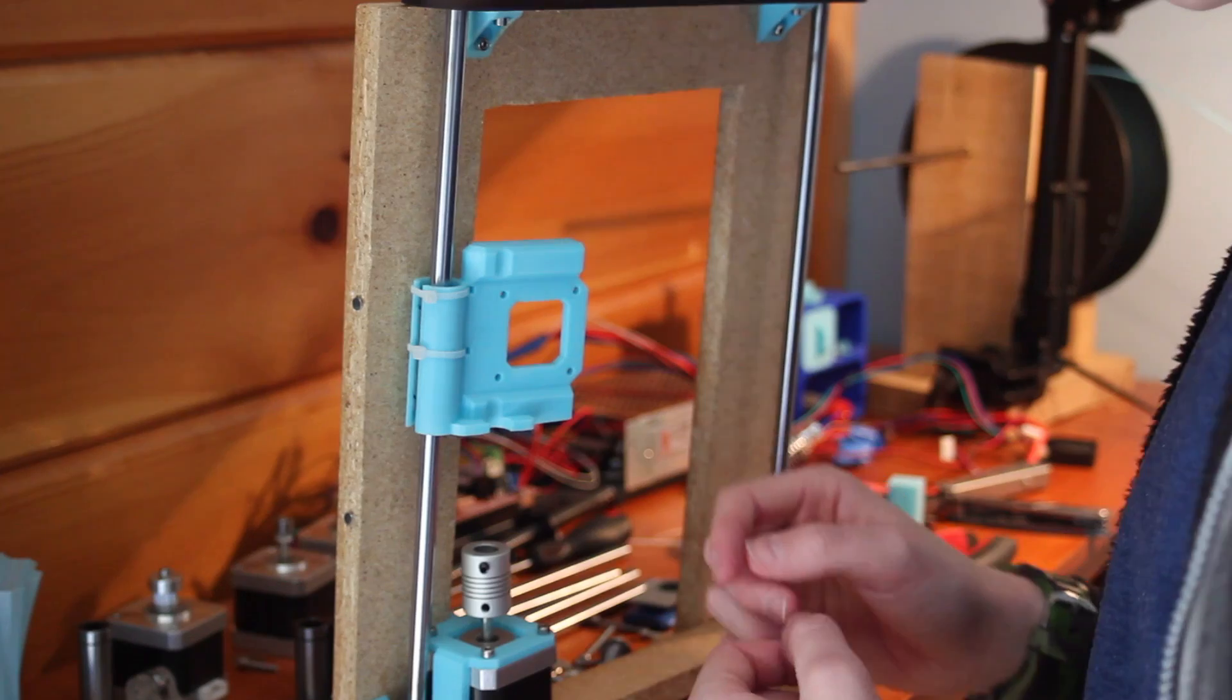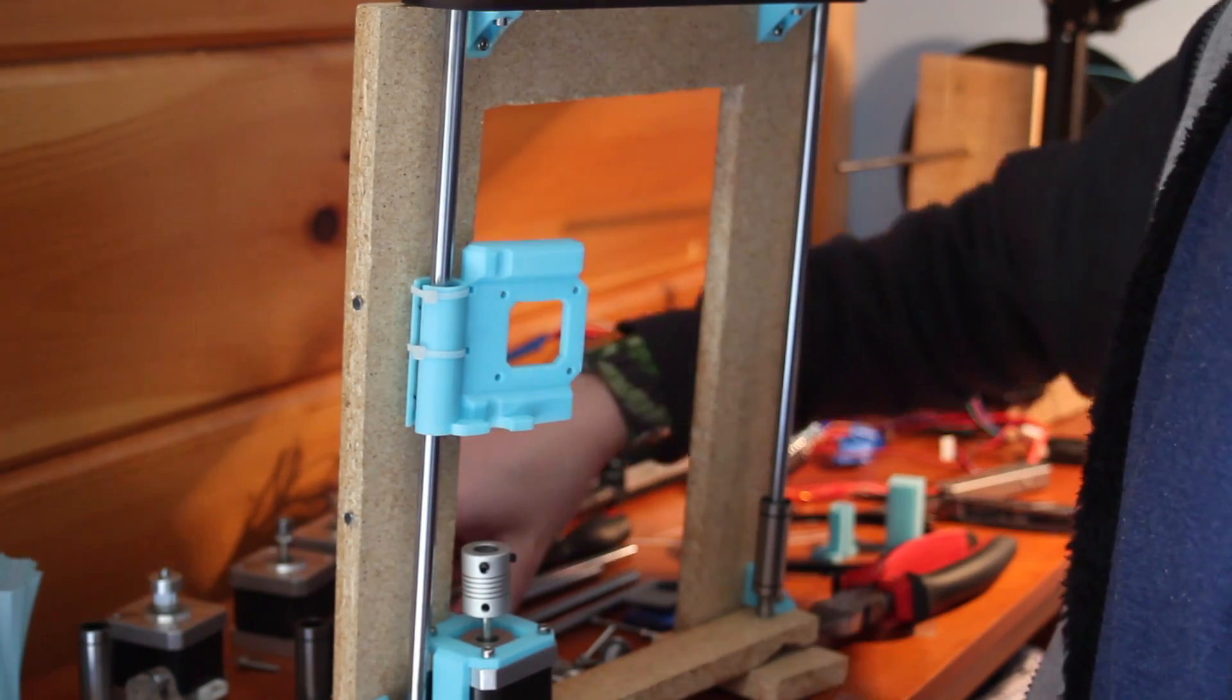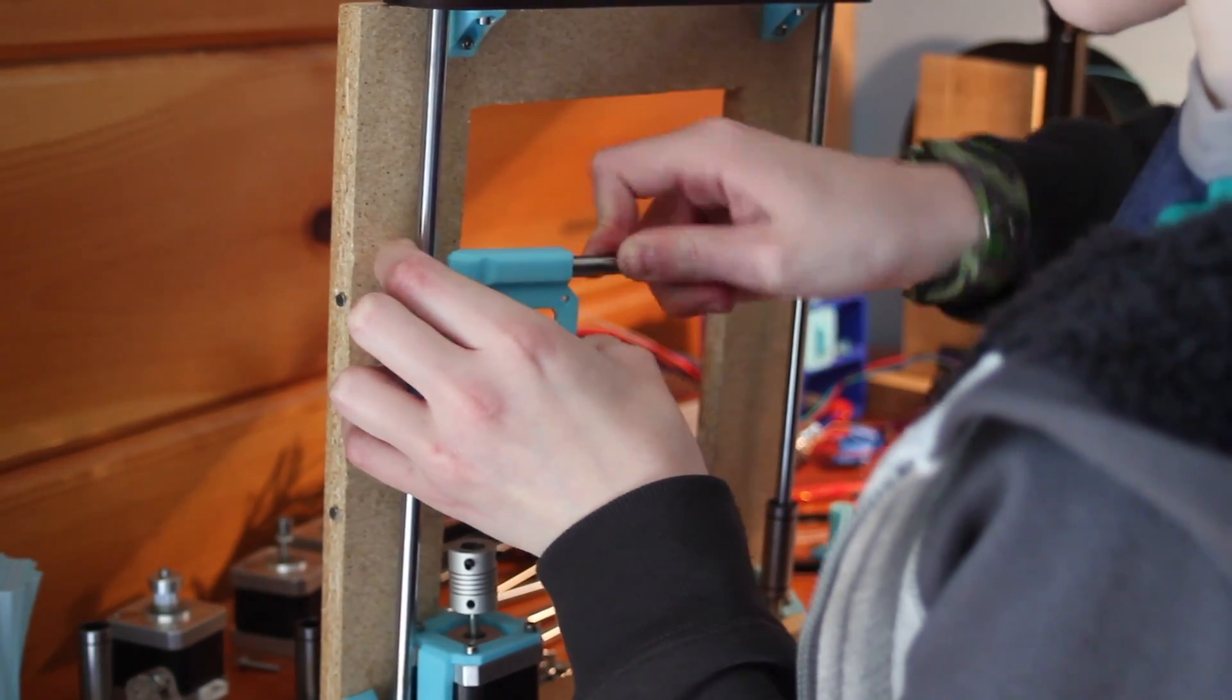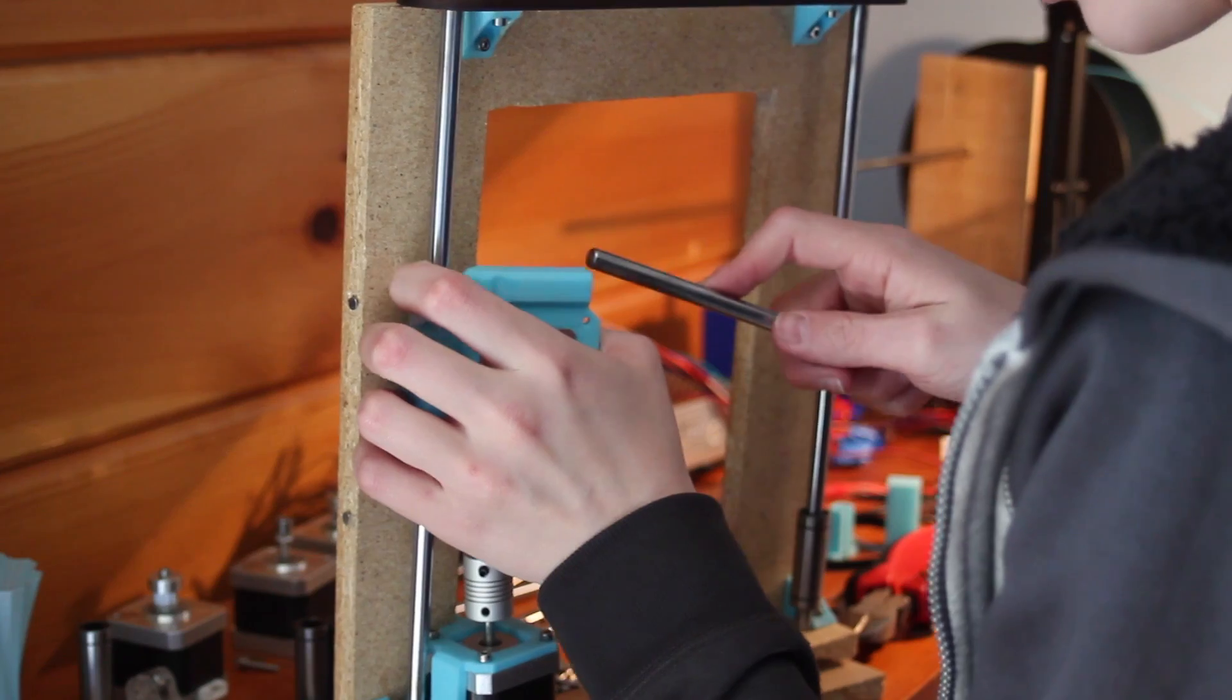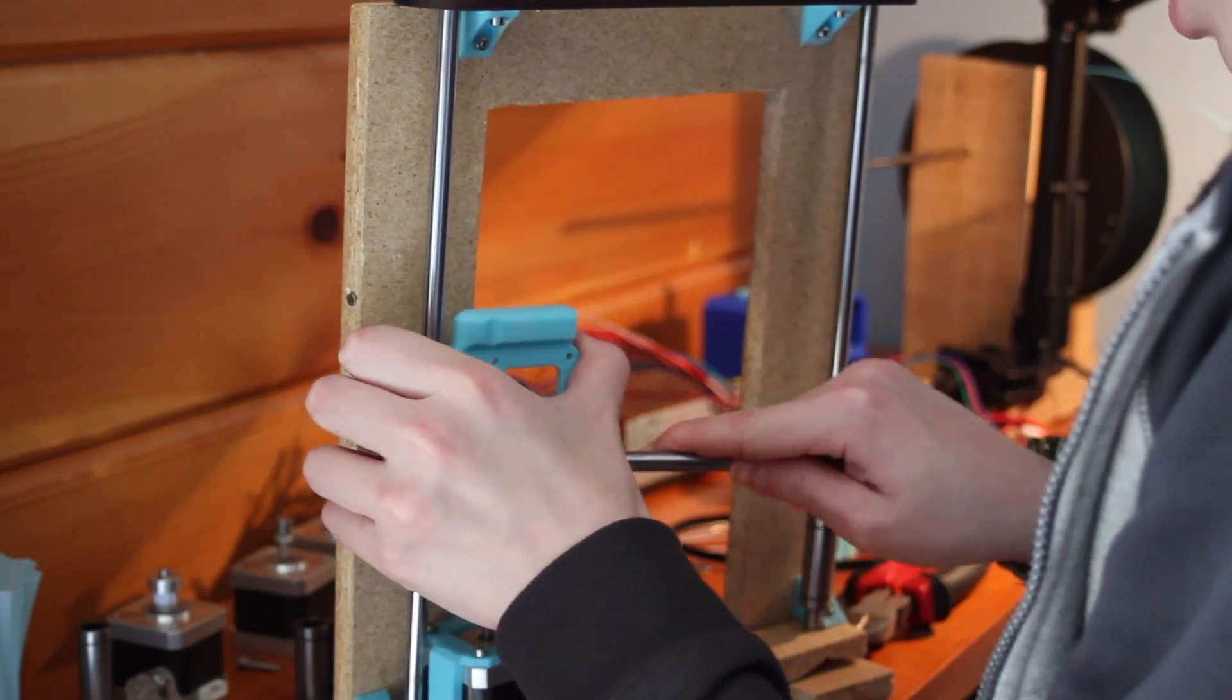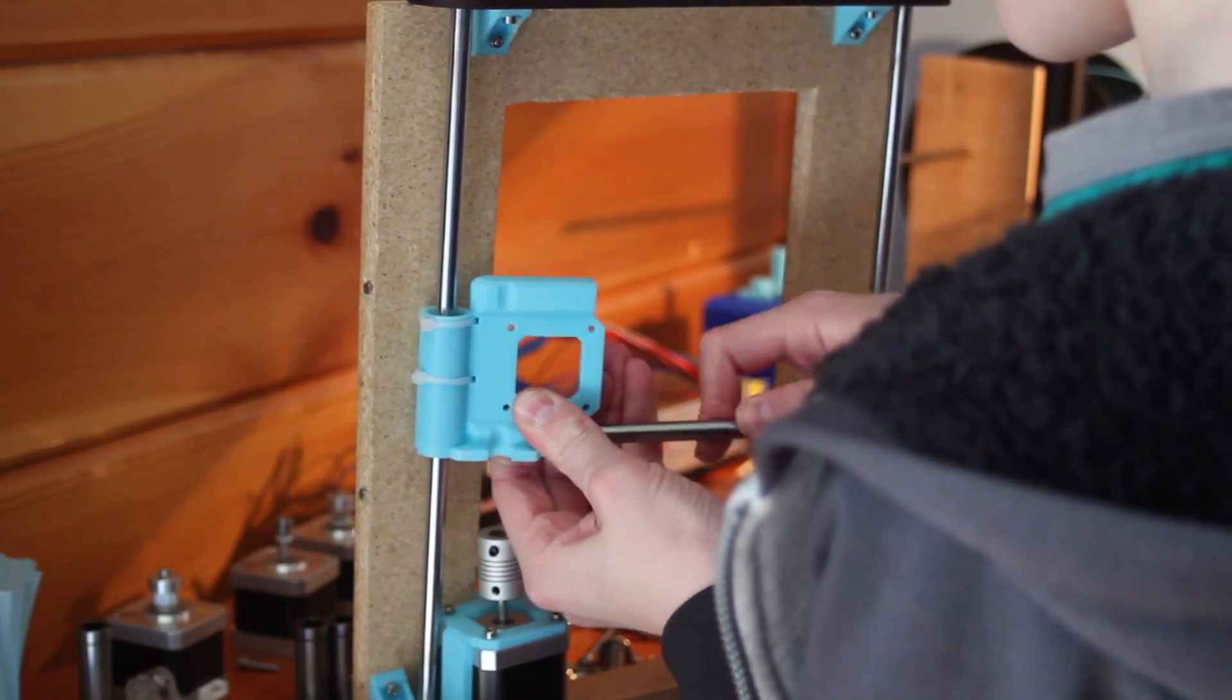So the next step here is to attach, well let's see here, I'll go ahead and attach the X-Gantry rods first. Let's just slide those in there. Now I made this a very tight fit. I might even have to hammer it in because I did it on purpose so that they would be very tight and secure. So I'm pretty sure I'm going to have to hammer these in. Yeah, I'm definitely going to have to. So let's go grab a hammer and try to get these in there.